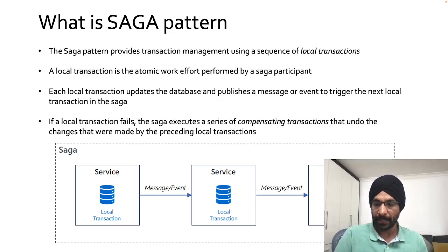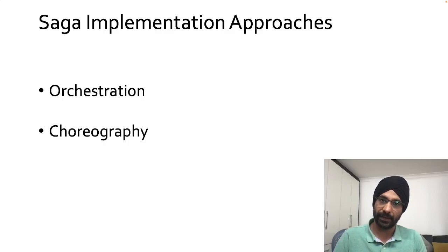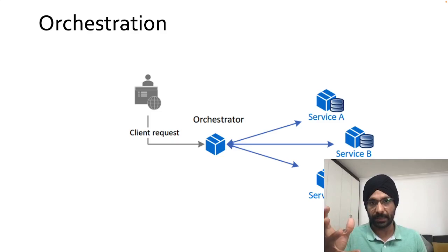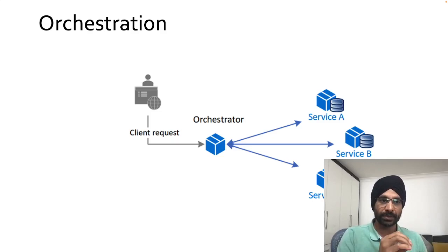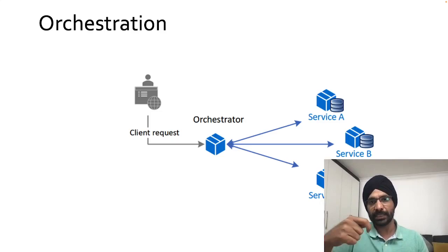There are two ways to implement SAGA: orchestration and choreography. In the orchestration approach, you have a central authority managing all transactions. When a request comes in, it goes to the central authority, which invokes service A first, then service B once A replies, then service C and D, and so on.